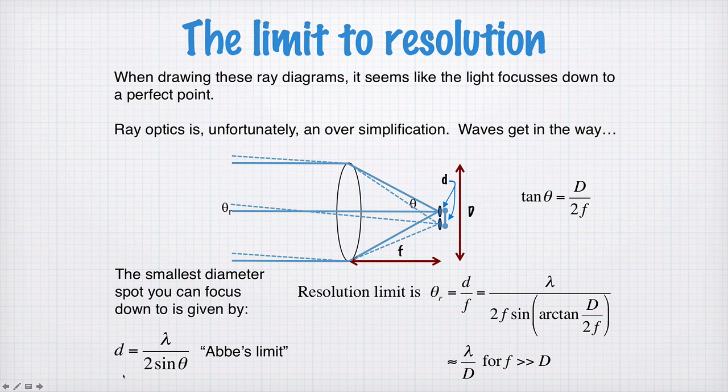Now I want to circle back and think about where Abbe's limit actually comes from, and it comes from the result of a diffraction argument. I'm going to present you a version of that argument now that is not 100% rigorous, in that it doesn't give you a fully quantitative explanation of where it arises, but it gives you the flavor of how it works and how diffraction results in this limit.